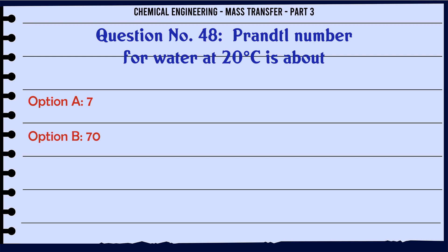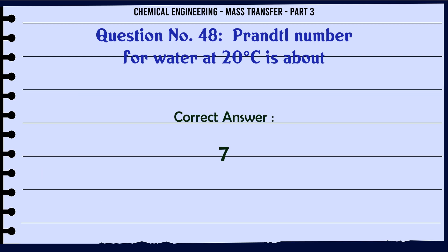Prandtl number for water at 20°C is about: A) 7, B) 70, C) 0.7, D) 150. The correct answer is: 7.